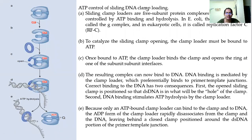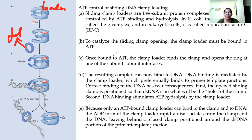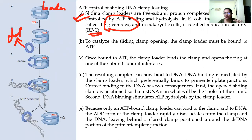Looking at another figure: the loader is shown here along with the sliding clamp. In the same way as before, ATP is required for the loader to interact and open the sliding clamp. In the case of E. coli, the clamp loader is called the gamma (γ) complex, and in the case of eukaryotes it is called Replication Factor C (RFC). This is a very important point to remember.